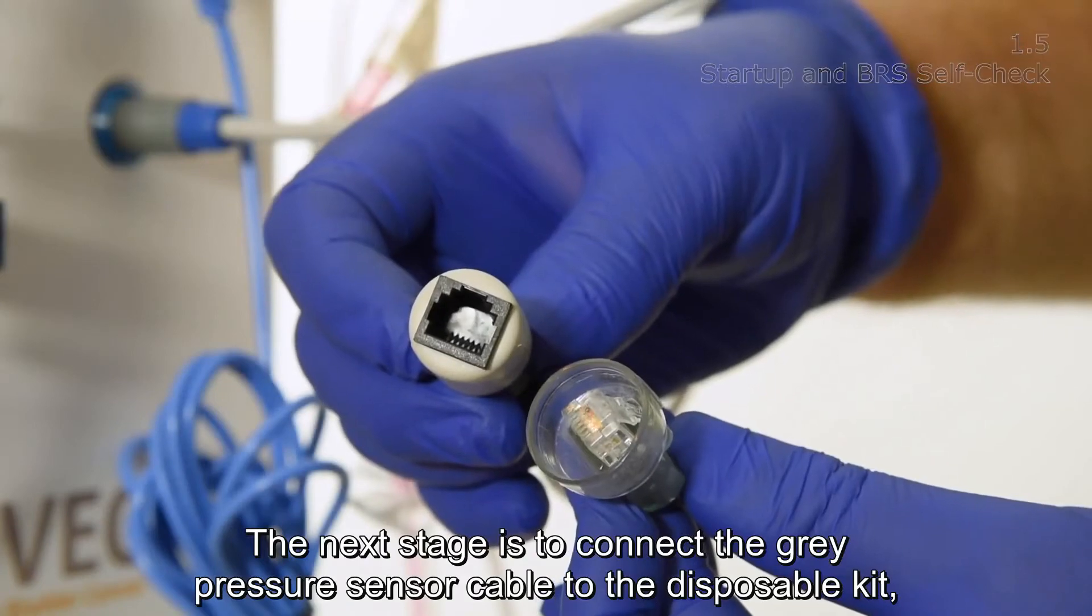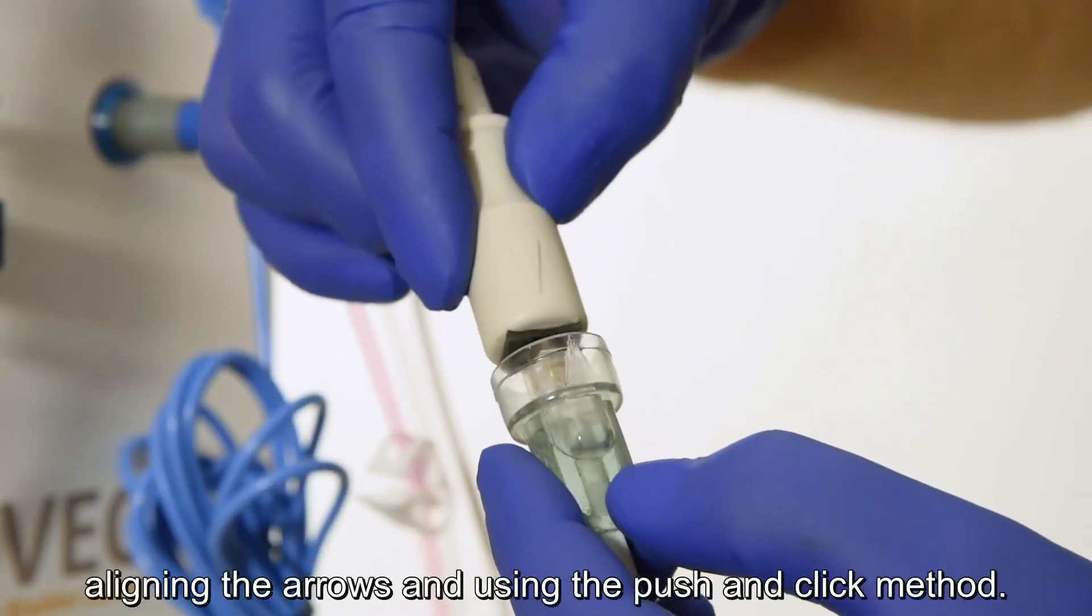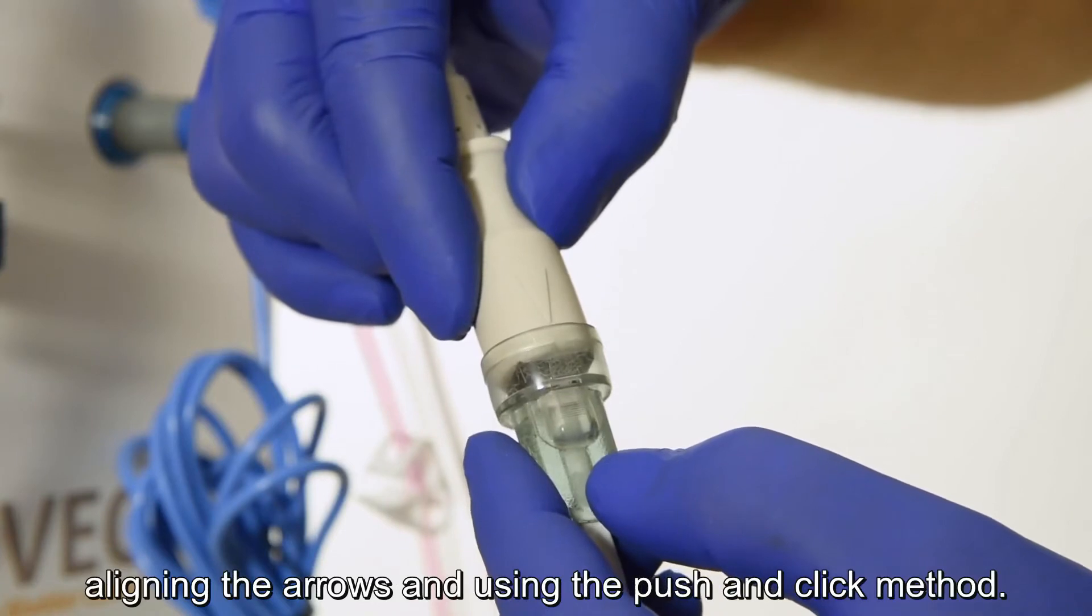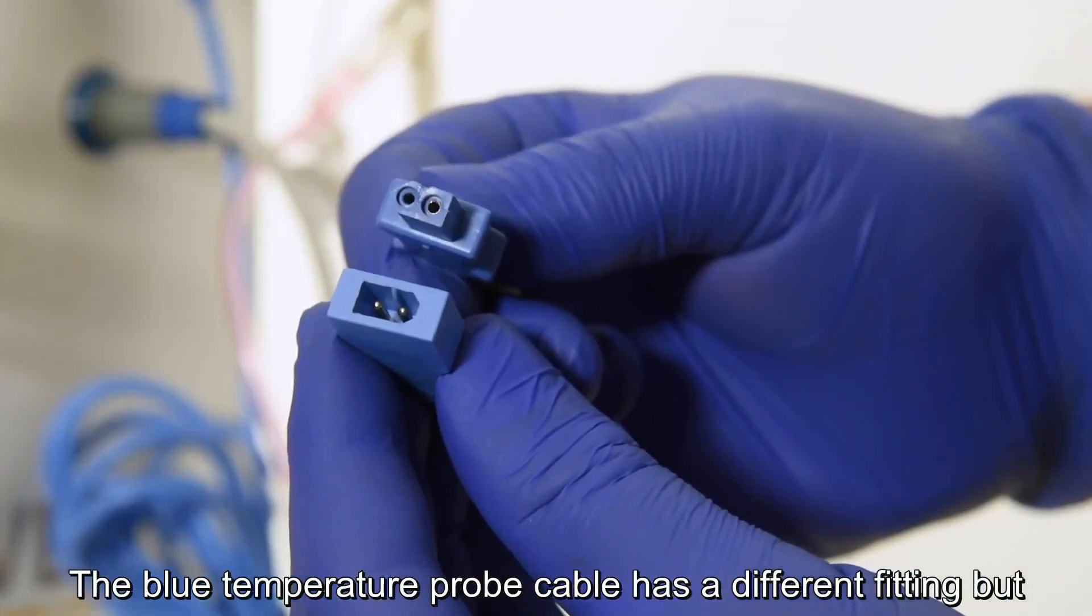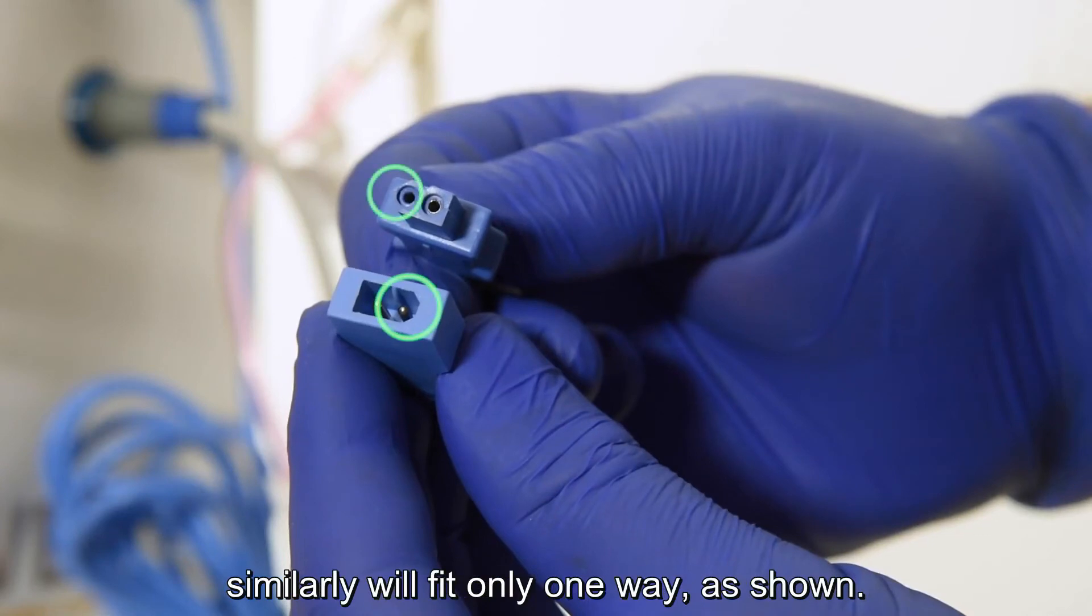The next stage is to connect the grey pressure sensor cable to the disposable kit, aligning the arrows and using the push and click method. The blue temperature probe cable has a different fitting, but similarly will fit only one way as shown.